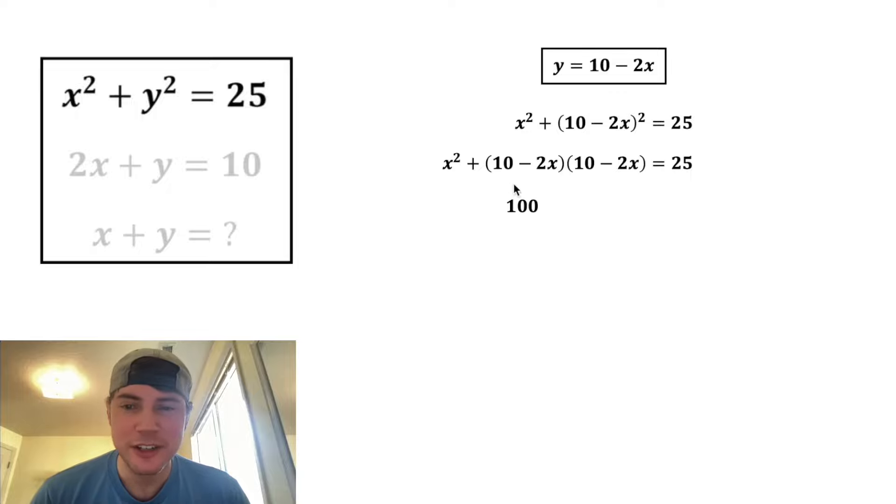10 times 10 is 100, 10 times negative 2x is negative 20x. Negative 2x times 10 is negative 20x, and negative 2x times negative 2x is positive 4x squared. And these two can combine to become negative 40x.